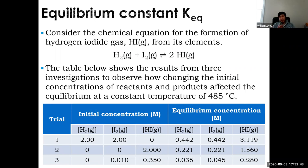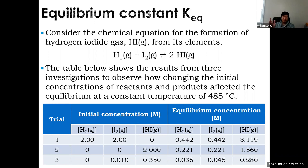For H2 + I2 → 2HI, someone ran three trials at constant temperature of 485°C. Trial one: 2 mol/L each of H2 and I2, no product. Trial two: all product at 4 mol/L HI, no reactants. Trial three: some I2 and HI but no hydrogen. Each gives equilibrium concentrations. Do you see a pattern in those numbers?